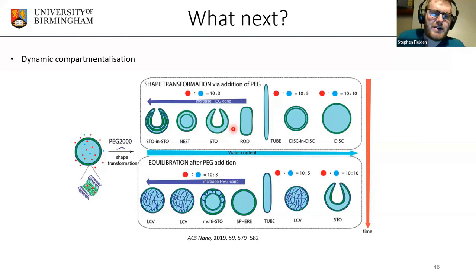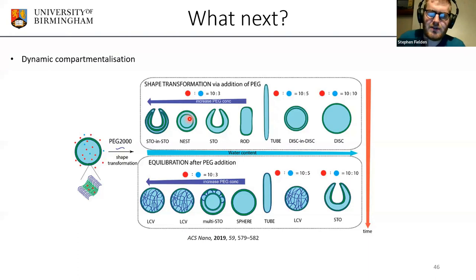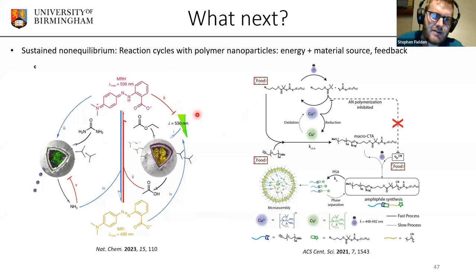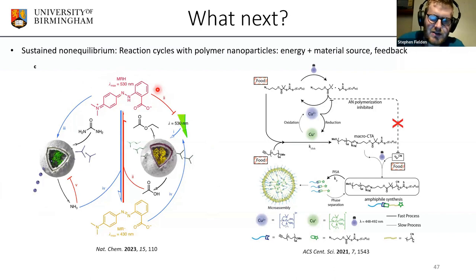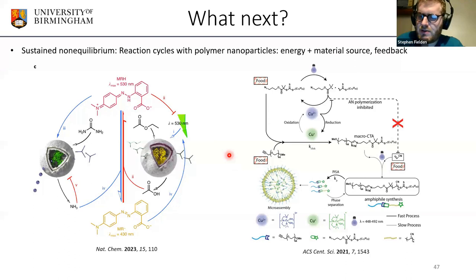Dynamic compartmentalization — particle containers that change over time, as seen in biological fusion — is something we're working toward. An interesting example uses osmotic pressure to put particles into a non-equilibrium state that slowly relaxes. And applying lessons from molecular machines — ratchet mechanisms, reaction cycles, dissipative assemblies, chemical fuels — to polymer-based nanotechnology could be really exciting. There are already examples where feedback mechanisms or sustained non-equilibrium processes occur using polymer assemblies, and this is something I think this field should pursue.